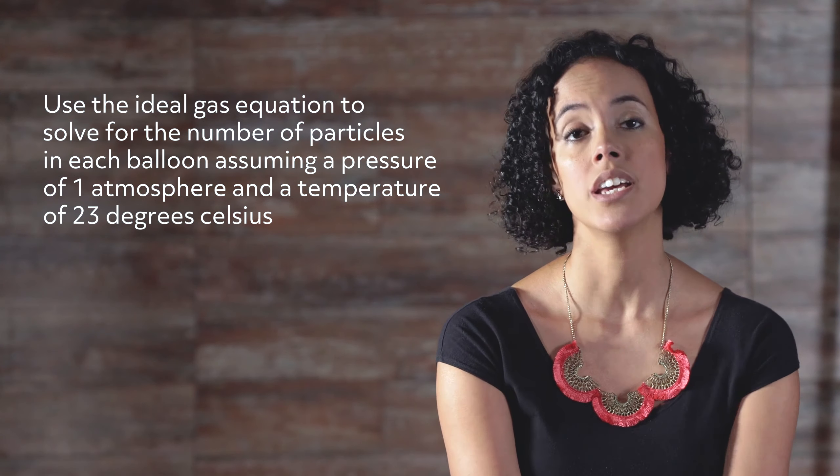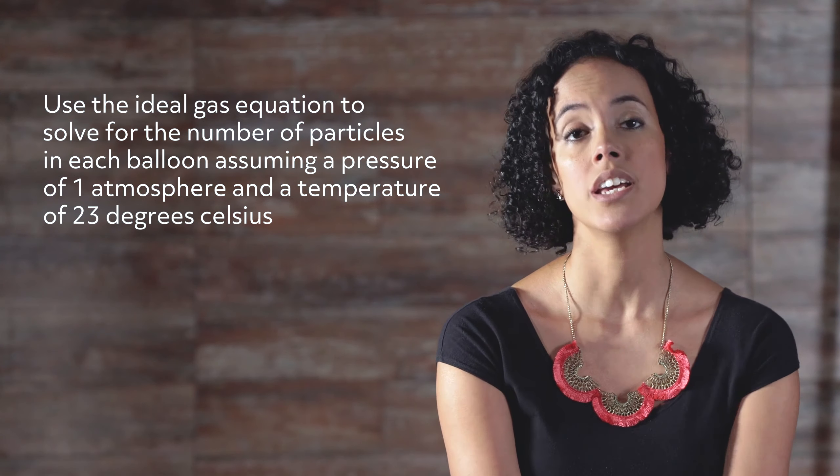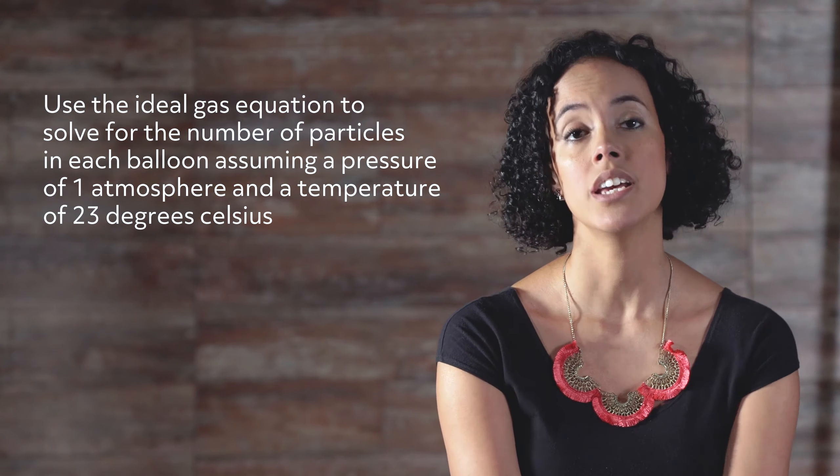Returning to our original 1-liter balloons, let's use the ideal gas equation to solve for the number of particles in each balloon, assuming a pressure of 1 atmosphere and a temperature of 23 degrees Celsius. The number of moles equals pressure times volume divided by the gas constant times temperature: 1 atmosphere times 1 liter divided by 0.082 liter-atmospheres per mole-kelvin times 296 kelvin, which gives us 0.041 moles of gas. Note that nowhere in the equation do we include any information about the chemical qualities of the specific gas, so from this one calculation, we know there were 0.041 moles of gas in all four balloons.